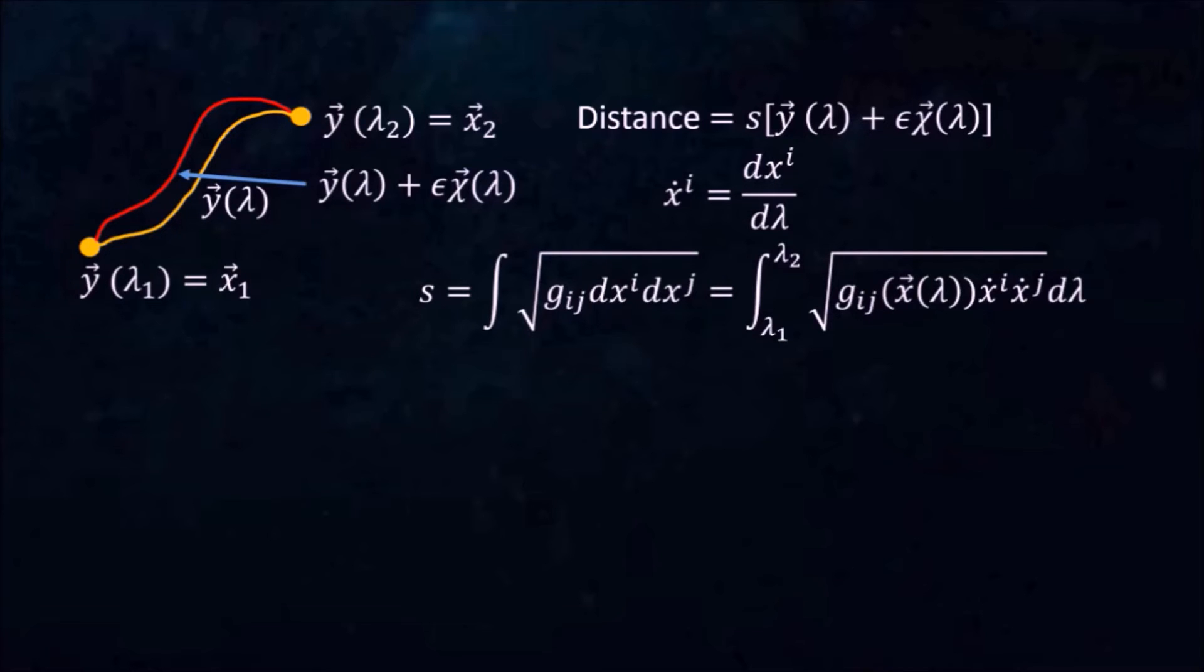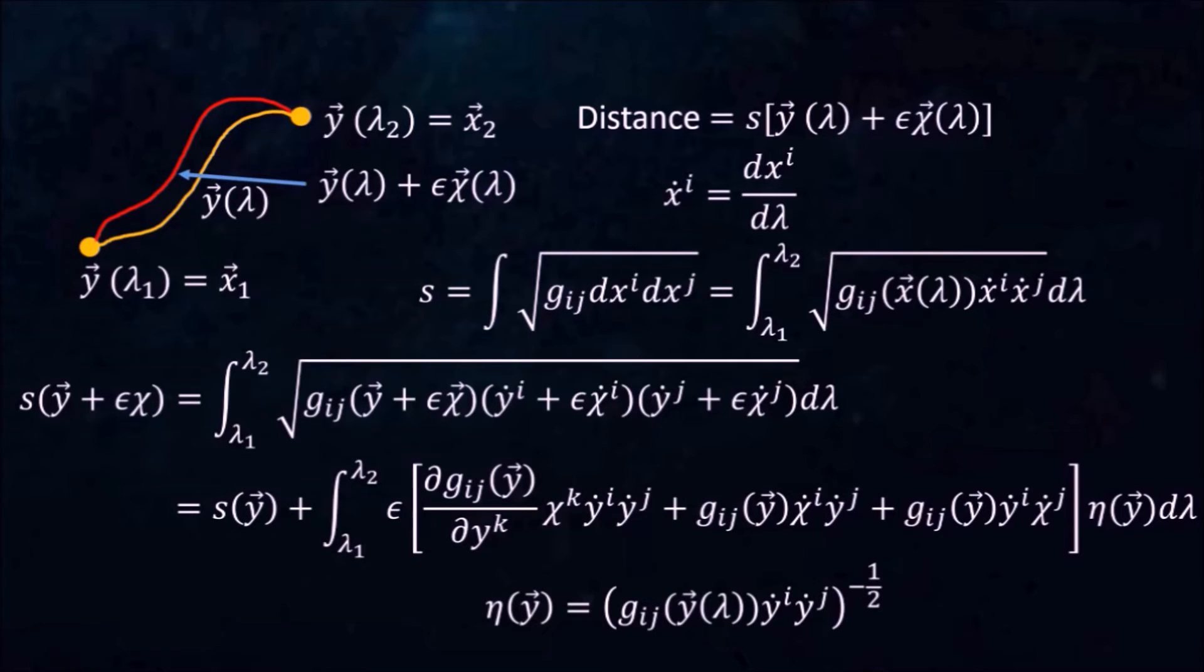The distance along the red curve is given by this integral. A Taylor expansion up to the first order on epsilon gives us the following expression, where eta is short for this.